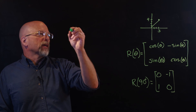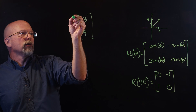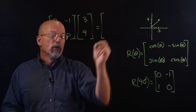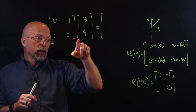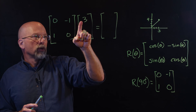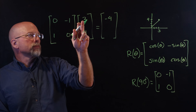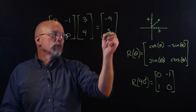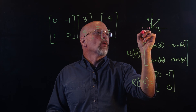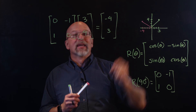To rotate 90 degrees: cosine(90°) = 0, negative sine(90°) = −1, sine(90°) = 1, cosine(90°) = 0. So the rotation matrix is [0, −1; 1, 0]. Multiplying by the vector [3, 4]: the top element is 0×3 + (−1×4) = −4, and the bottom element is 1×3 + 0×4 = 3. The result is [−4, 3], which is a 90-degree rotation.